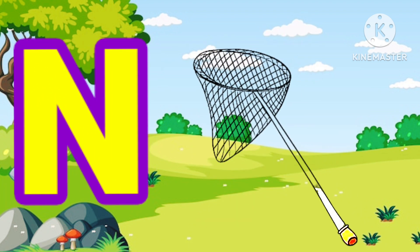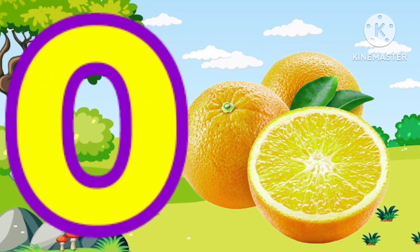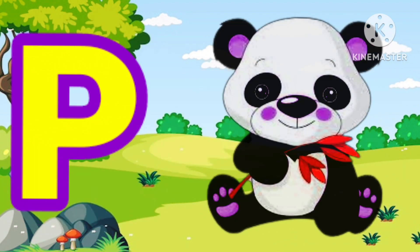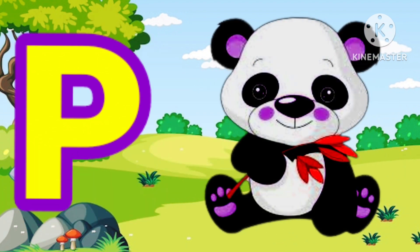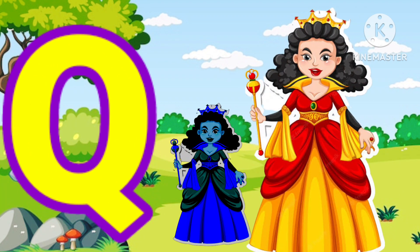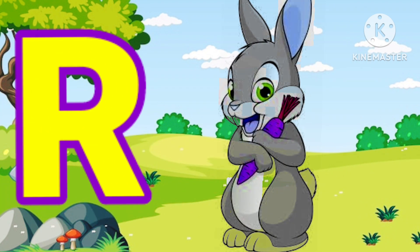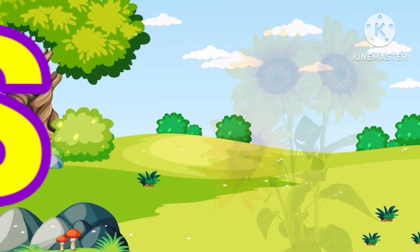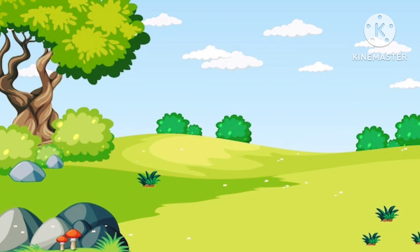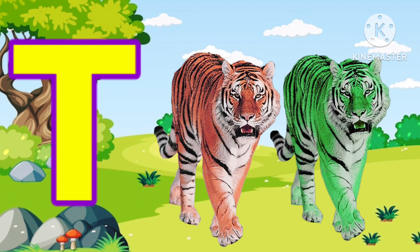M for mango, N for net, O for orange, V for panda, U for queen, R for rabbit, S for sunflower, T for tiger.